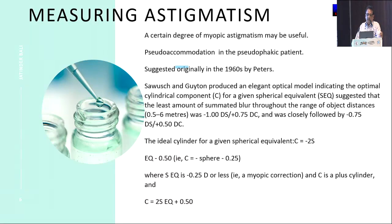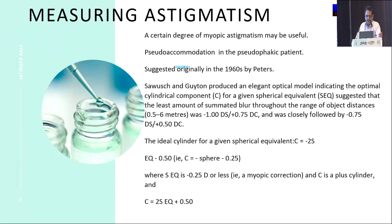In the 1960s, Peters suggested that a certain degree of myopic astigmatism may be useful because it induces pseudo-accommodation in a pseudophakic patient. They calculated the amount of spherical error and the amount of cylinder which is the optimum cylinder for that given spherical error. At the bottom, you'll be able to see the calculations for that.